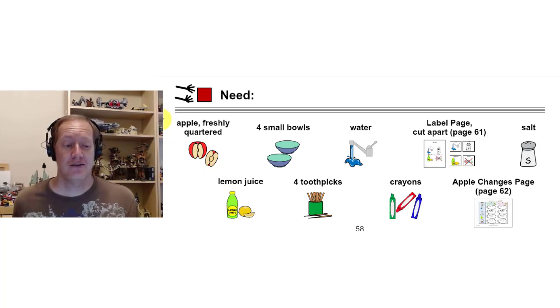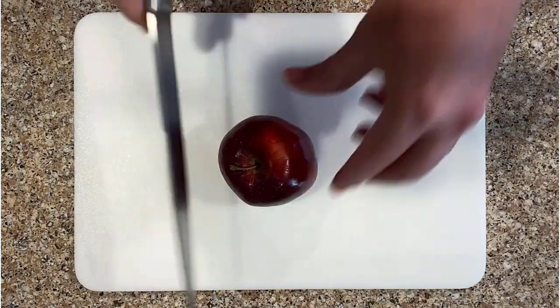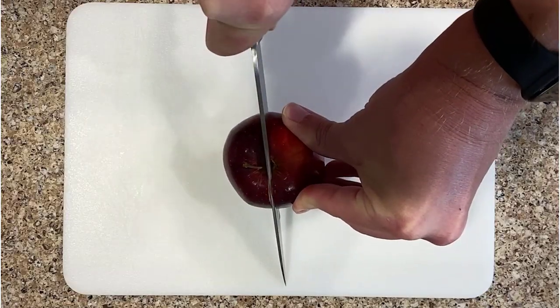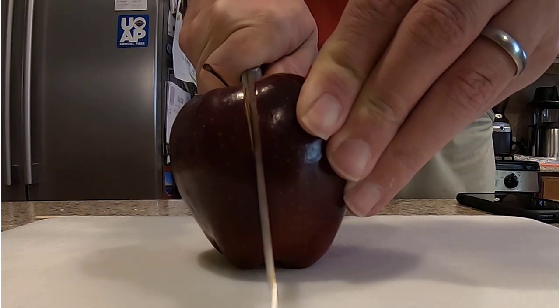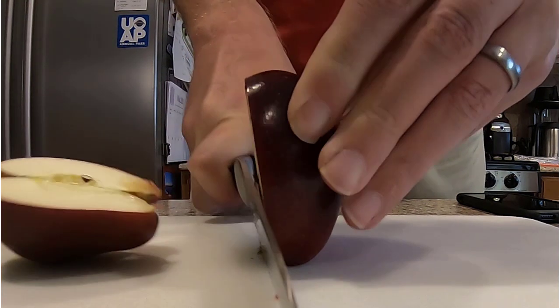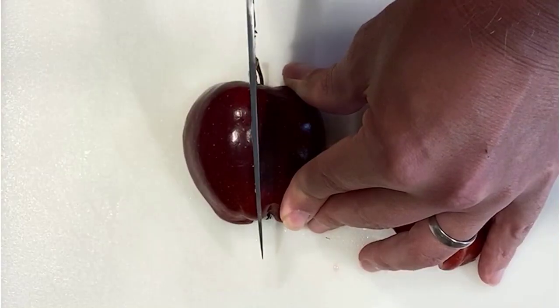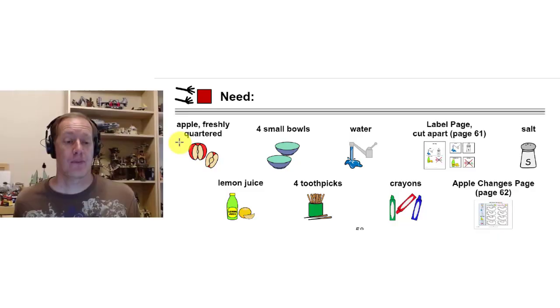All right, for science today we are going to need some different things. We need an apple freshly quartered, that means cut into four slices like this. What else do we need? We need four small bowls, we need some water, we need our label page cut apart.